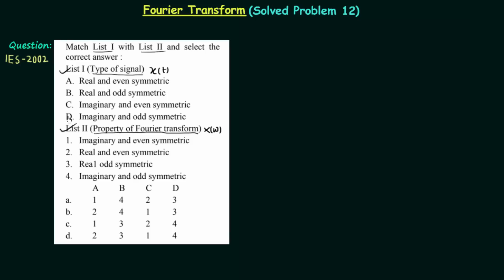So let's match A, B, C, D with 1, 2, 3, and 4. Signal A is real and even symmetric. Since xt is real and even, we know the corresponding Fourier transform is also real and even. So A will match to 2.